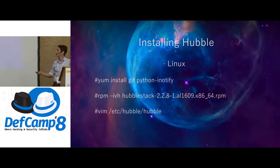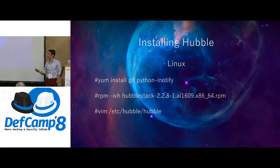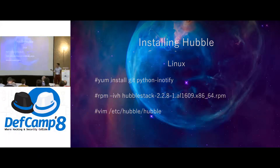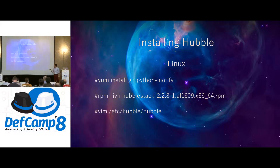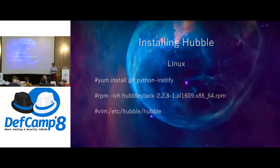So, let's go into installing Hubble. On Linux, all you need to do is install git and Python inotify. Then you download the latest release from the GitHub page and install it. Then you need to modify the config file, which is located at /etc/hubble/hubble. There you'll have instructions in the config file. You need to uncomment the scheduler stuff and the returner, and give it where you want it to return — index, token, and how you want the data to be split. Just make sure you restart the agent whenever you make changes.